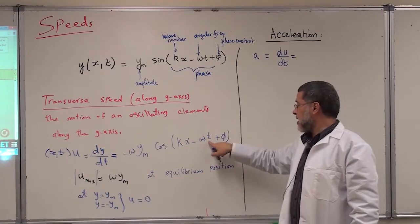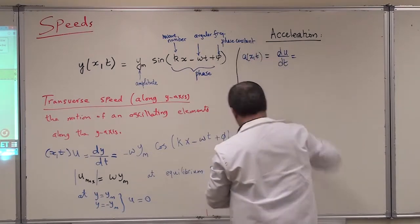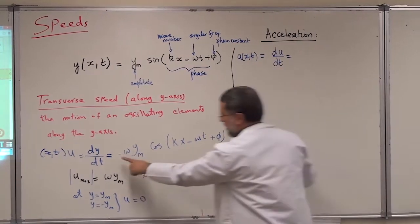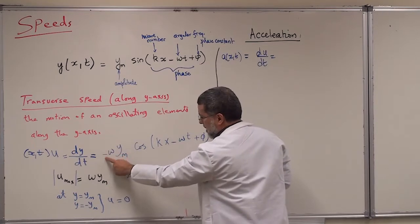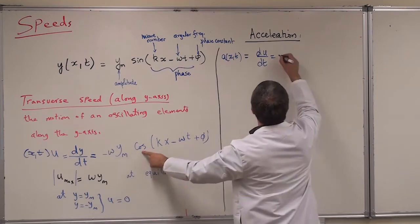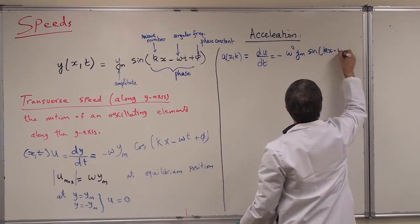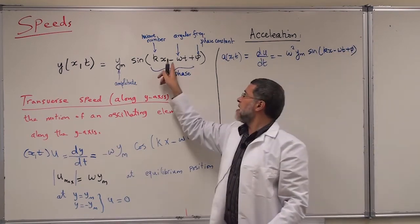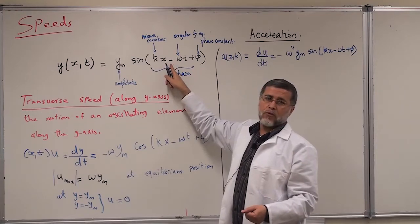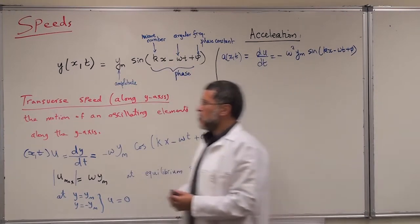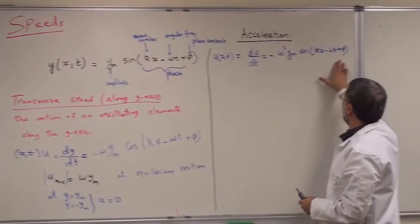We differentiate the transverse velocity equation with respect to time and get the acceleration of the particle as a function of x and t. We have a minus sign and a cosine, with another minus sign. Differentiation will bring out minus omega. With the minus omega it will be plus omega squared, and the differential of the cosine will be minus sine. So there will be a minus sign, omega squared, ym, sine of kx minus omega t plus phi. The minus sign here means the wave is moving to the right. If you see a plus sign, it means the wave is moving to the left.